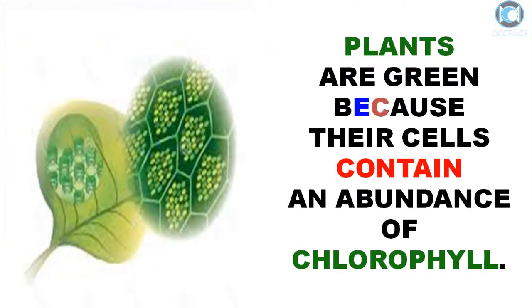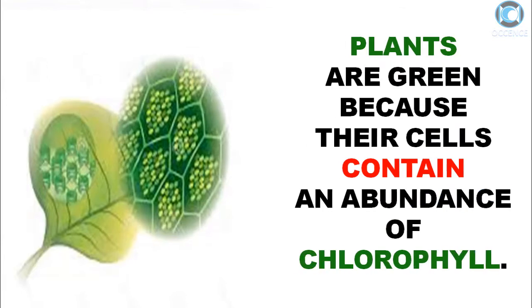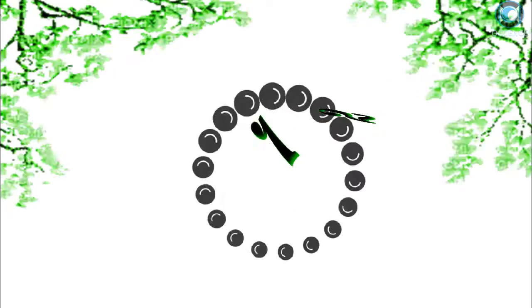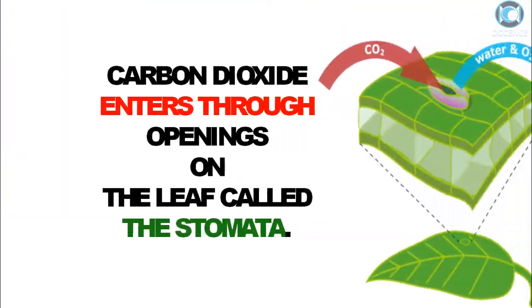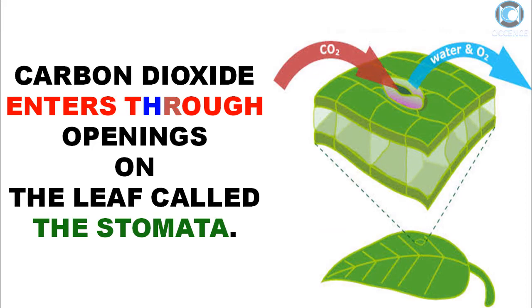The green pigment chlorophyll is located within the thylakoid membrane. Plants are green because their cells contain an abundance of chlorophyll. Carbon dioxide enters through openings on the leaf called the stomata.